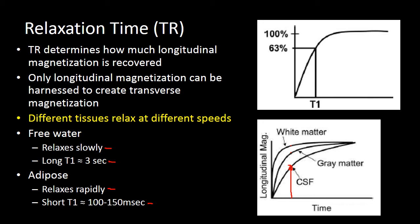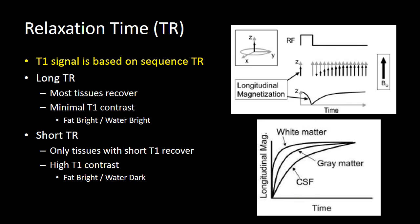It is only the transverse magnetization that we can measure — we can only harness longitudinal magnetization and measure the sum of the transverse magnetization. In general, your T1 signal is going to be based on the sequence's TR. If we have a long TR, almost all the tissues have had time to recover, and since all the tissues have recovered, they are all going to contribute a lot to the signal, with very little T1 contrast between different tissue types.